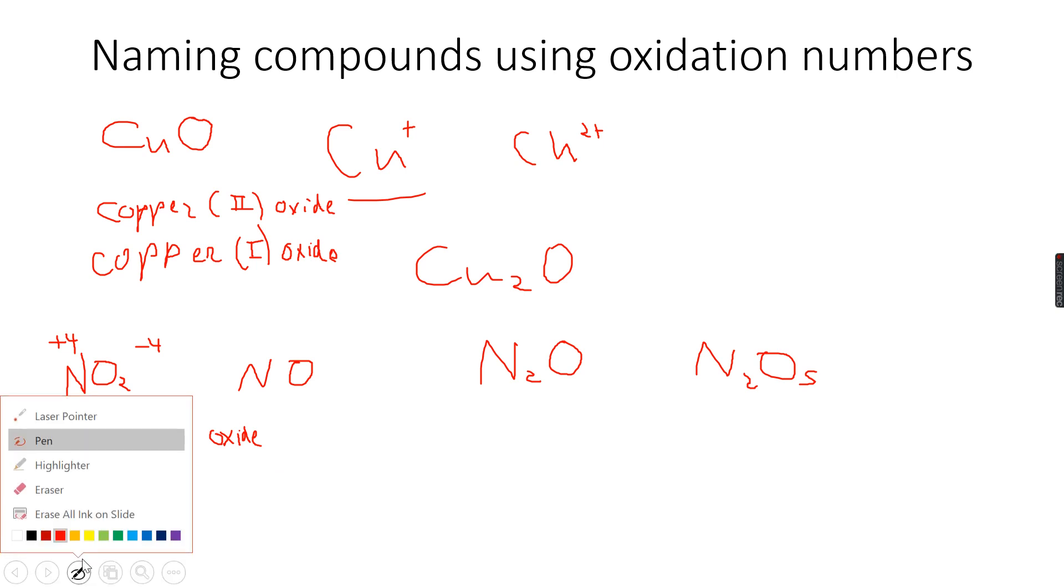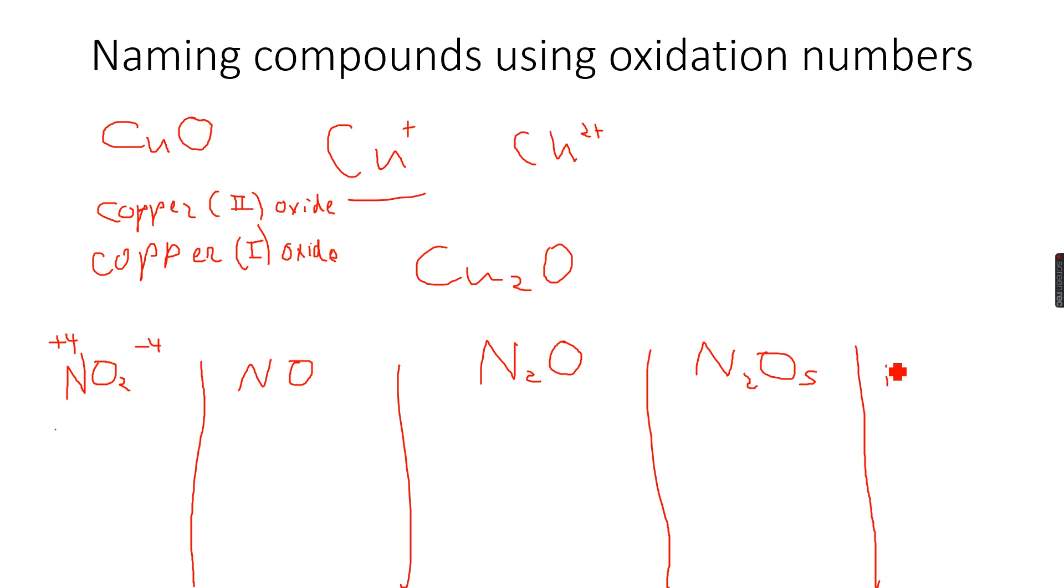Let me write it below the element, otherwise you will get confused. Let's take one more, N2O4. This is nitrogen(IV) oxide because the oxidation state of nitrogen is plus four. Then this one minus two, so this has to be plus two because plus two minus two equals zero. So this one is nitrogen(II) oxide.